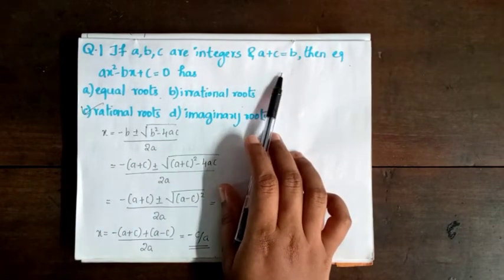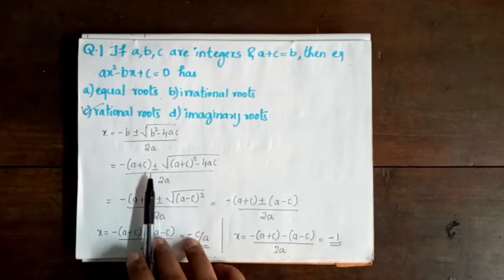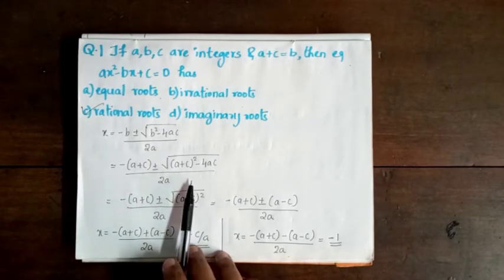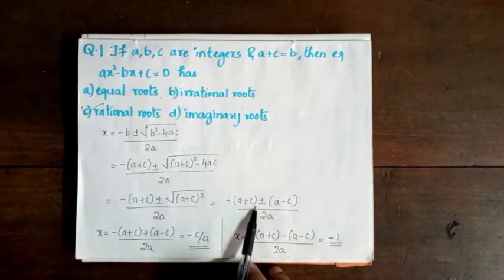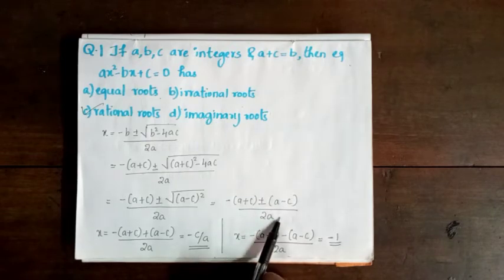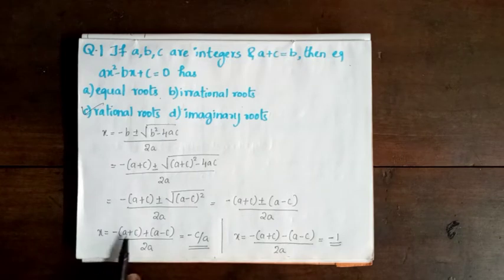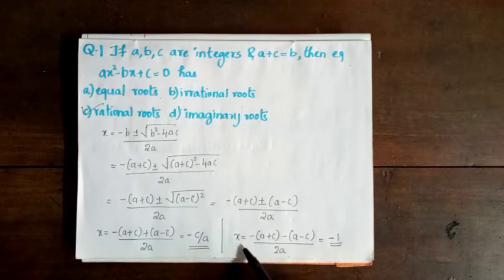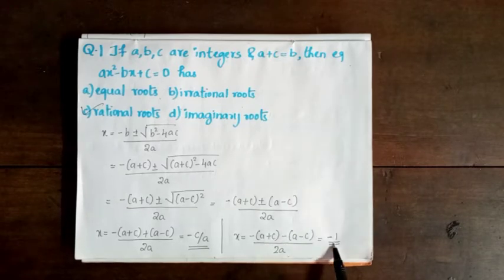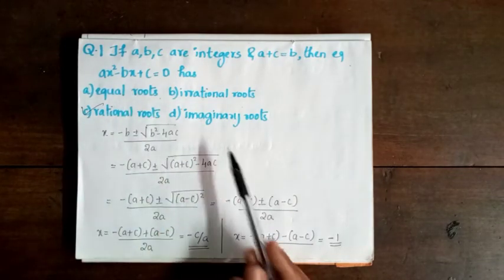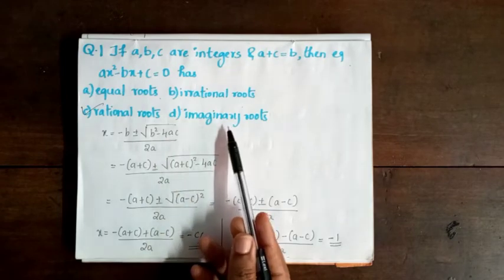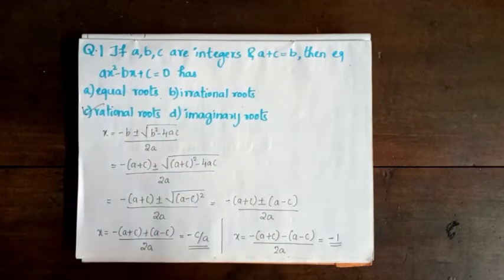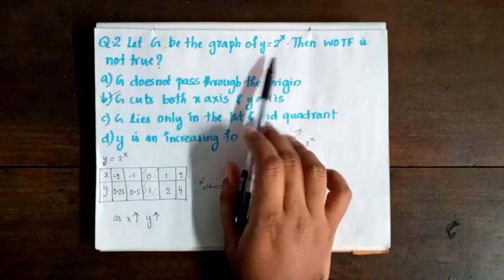We substitute a plus c equals b. So a plus c is substituted, giving us a plus c equals minus c by a, and then a plus c minus a minus c by 2a. This gives a plus c equal to minus 1a.